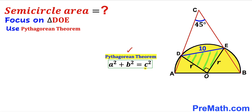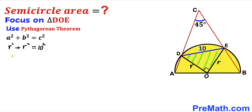Here is our Pythagorean theorem: a² + b² = c², where c is the longest side. With OD and OE as the two legs and DE = 10 as the hypotenuse, we get: r² + r² = 10². Combining like terms on the left-hand side: 2r² = 100. Dividing both sides by 2 to isolate r², we find that r² = 50.